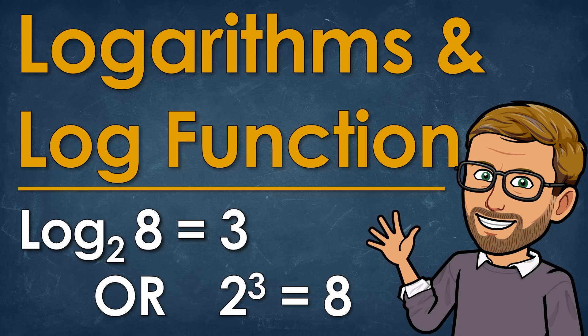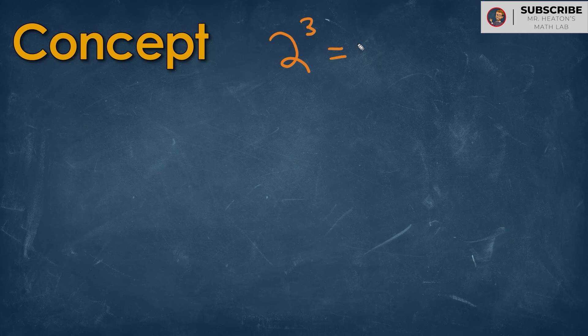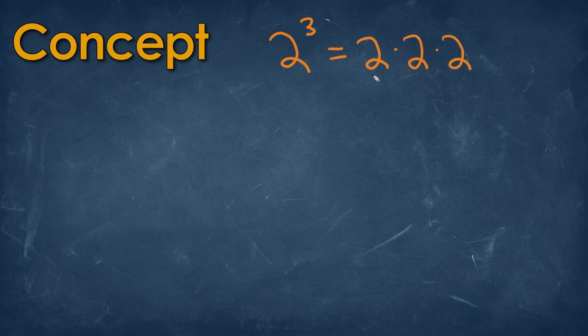In this video, we're going to learn about logarithms — what logarithms mean and what we see when we graph a logarithmic function. Say we're given a value of 2 and we raise it to the third power. That means we're going to be multiplying 2 times 2 times 2. We multiply 2 three times to get a value of 8.